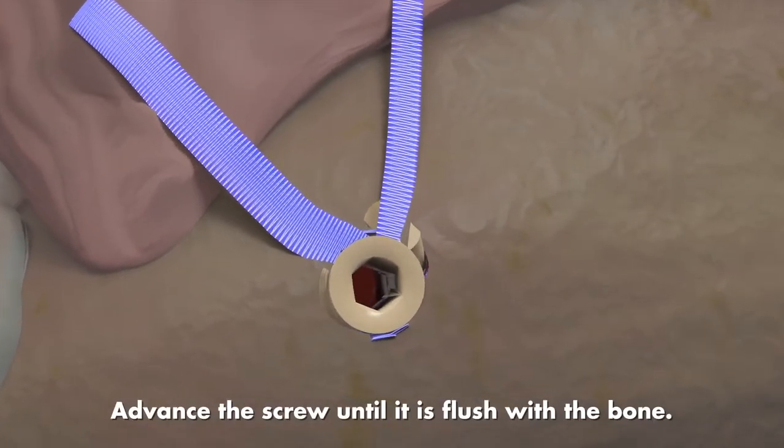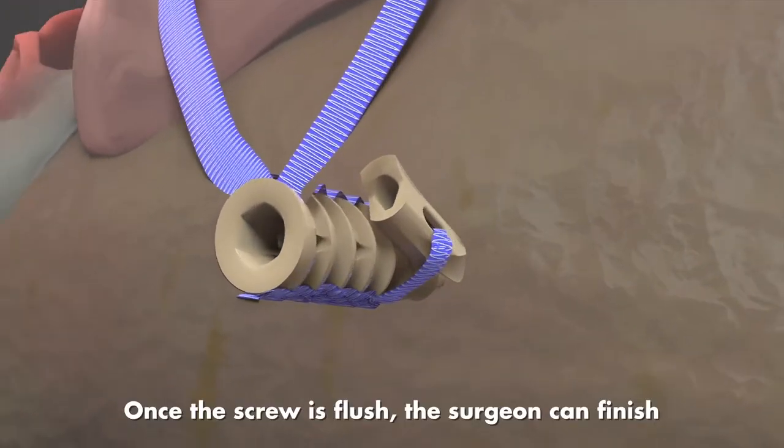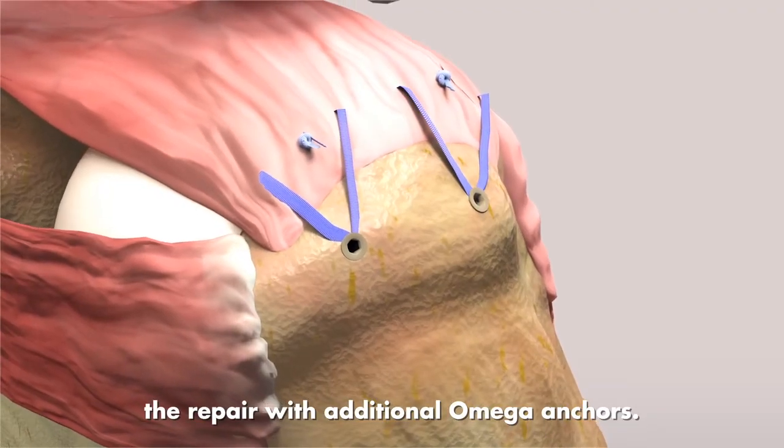Advance the screw until it is flush with the bone. Once the screw is flush, the surgeon can finish the repair with additional Omega anchors.